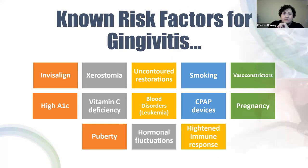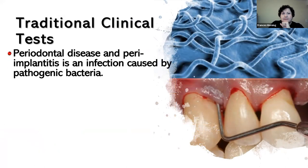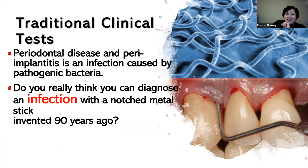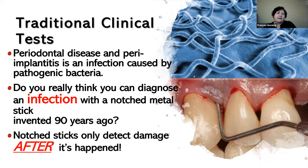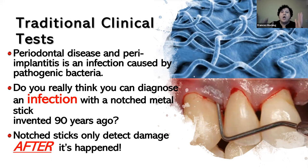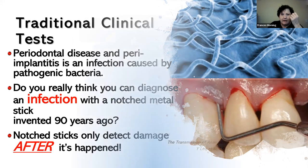Tissue characteristics — when you have bleeding, it's not reliable as a sole indicator. There are other factors causing gingival irritation: smoking, Invisalign, xerostomia, uncontoured restorations, CPAP devices, and more. We can't use just what we see clinically as the only indicator. For our traditional tests: periodontal disease and peri-implantitis is an infection caused by pathogenic bacteria — do you really think you can diagnose an infection with a notched metal stick? It only detects the disease after it has already occurred.